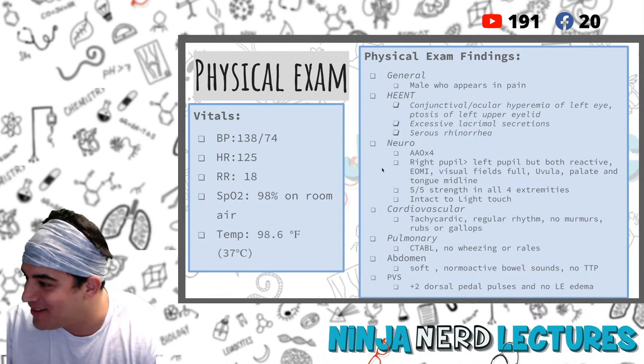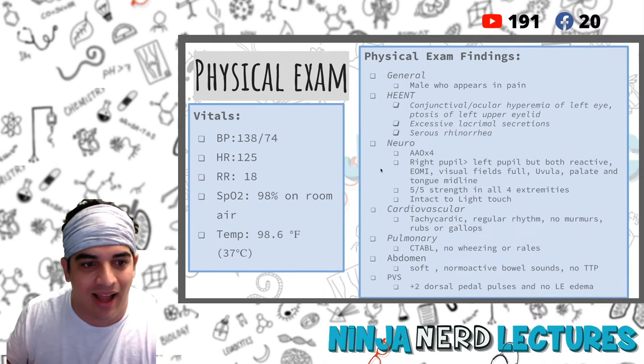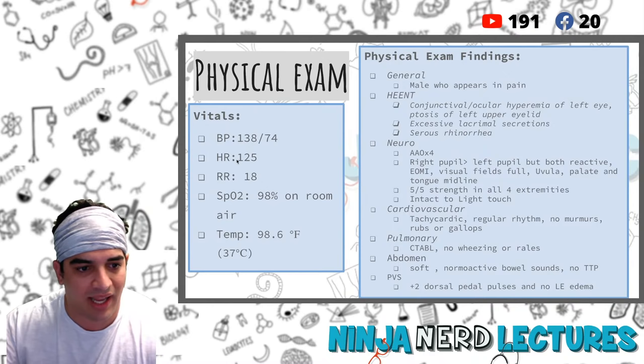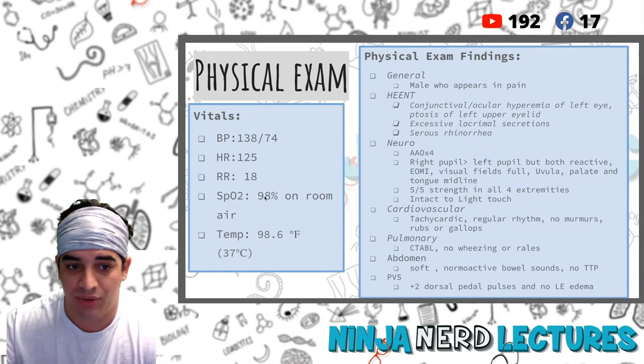Physical exam vitals: BP 138 over 74 - technically borderline hypertension but not stage 2. Heart rate 125, respiratory rate 18, SpO2 98% on room air, temperature 98.6°F or 37°C.